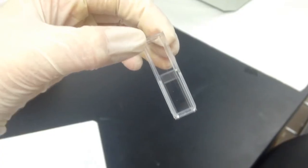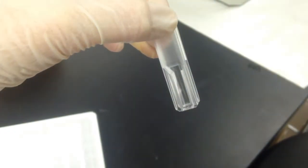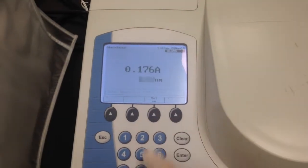Since the machine is used to measure the absorbance of larger sample volumes, we will be using a cuvette. Begin by setting the machine to the desired wavelength.